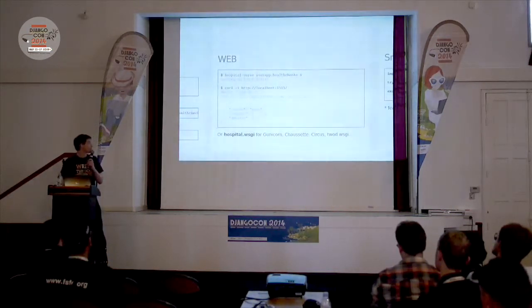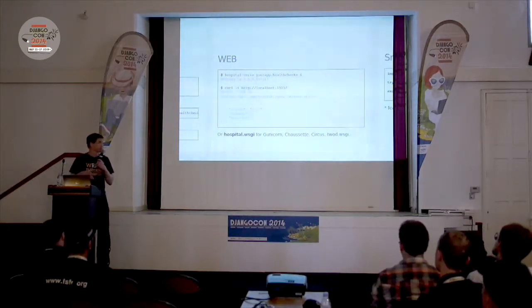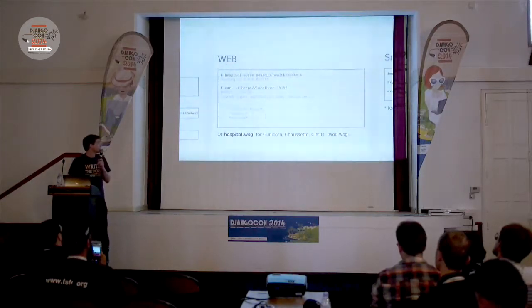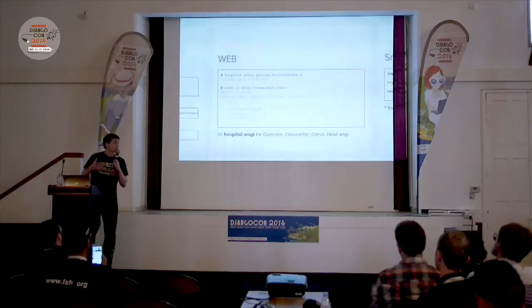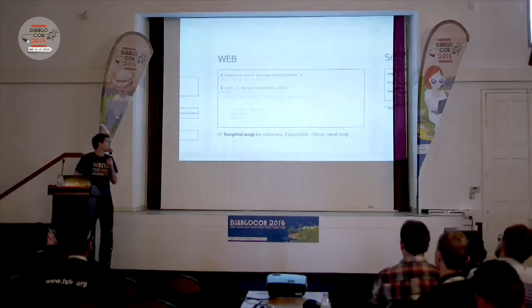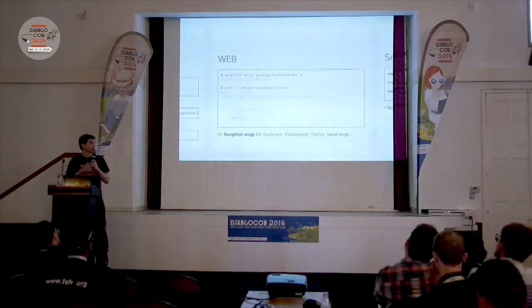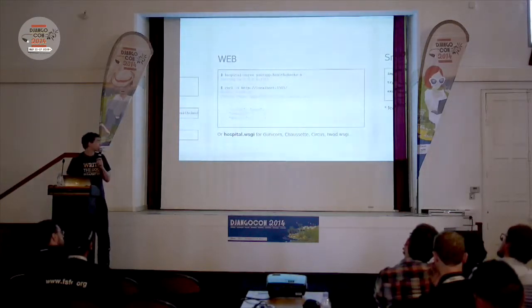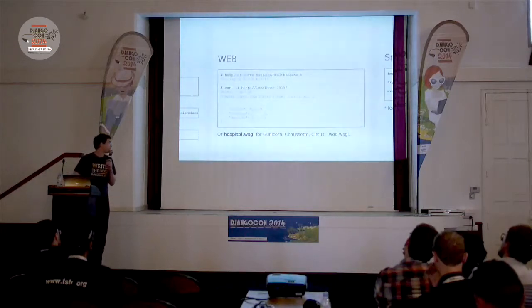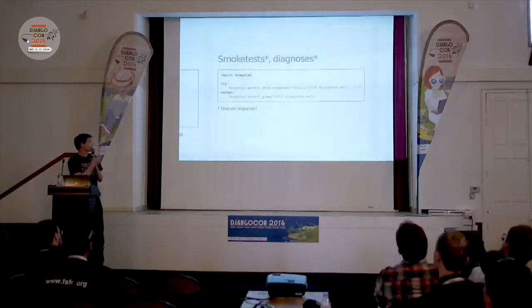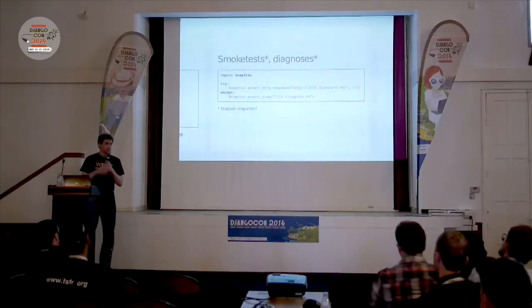Another way to run health checks is to run them as a web service. You can use the hospital server or the built-in WSGI application with another server. Then you can emit HTTP requests to the health check server and get a 200 response if the health check passed, or a 500 if the health check failed. So it's really simple. As I said before, hospital is working — writing and collecting health checks is actually working.